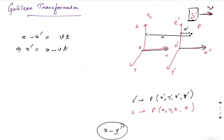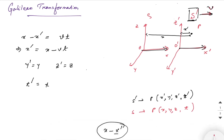Therefore x' = x − vt. Since motion is only along the x-axis, y' = y and z' = z. In Galilean transformation, the time recorded in both frames is the same — the time dilation concept was not introduced at that time. So t' = t. These are the Galilean transformation equations.